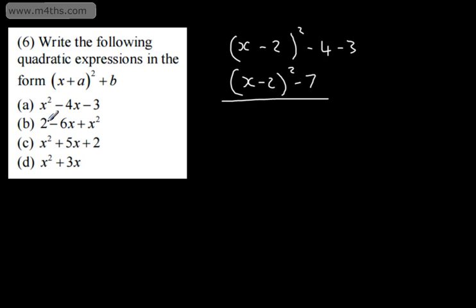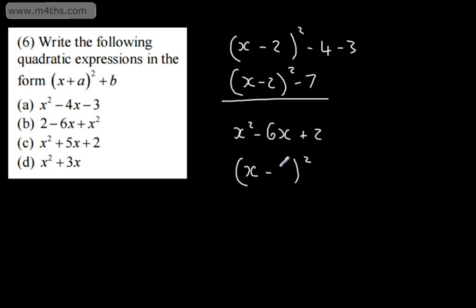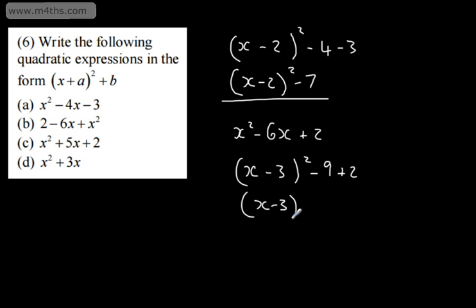For the next example we need to rearrange to x²-6x+2. Setting up the bracket to square, we need half the coefficient of x with its sign, which is negative 3. We subtract negative 3 squared, which gives positive 9, subtract that away, then add back the 2. So we get (x-3)²-7.